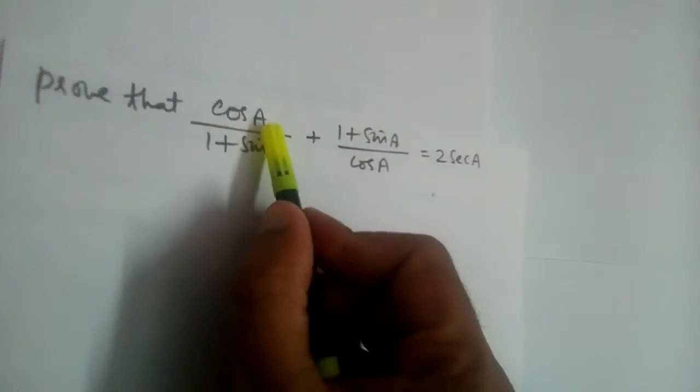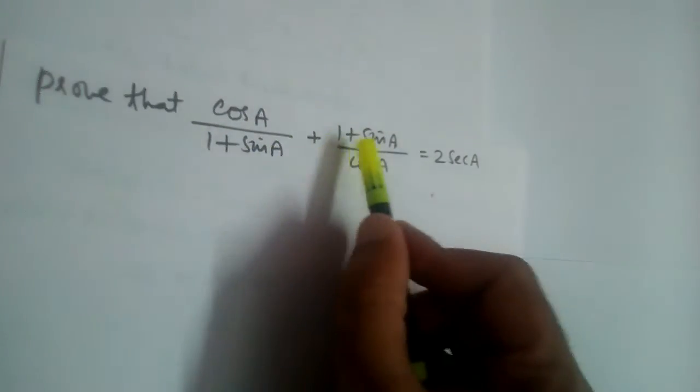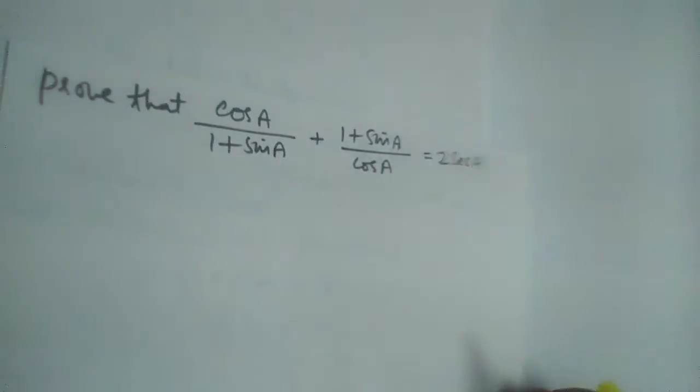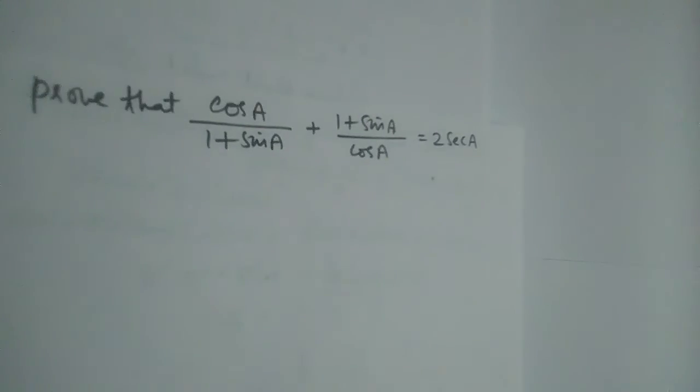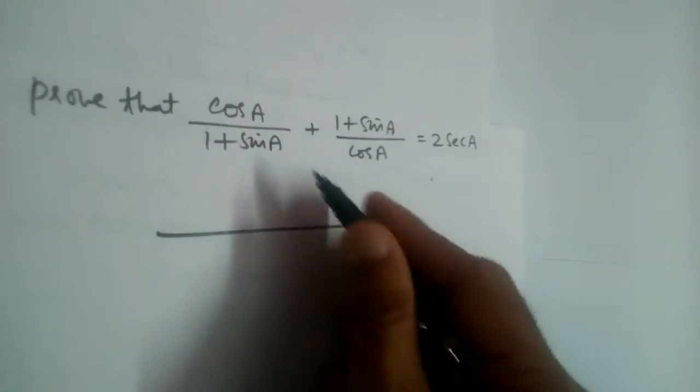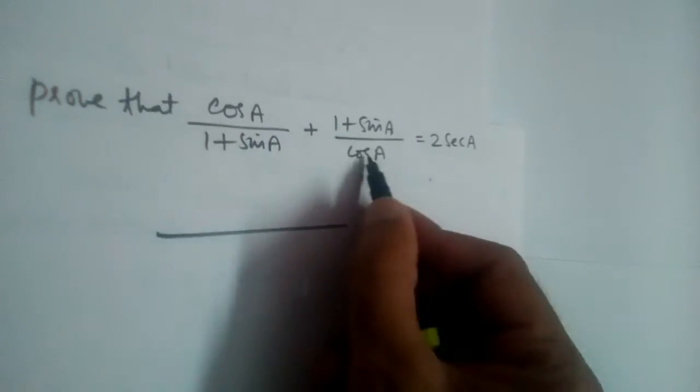Prove that cos A divided by 1 plus sine A, plus 1 plus sine A divided by cos A, is equal to 2 secant A. Now let us simplify this and write it as one term. See, the denominators are different.